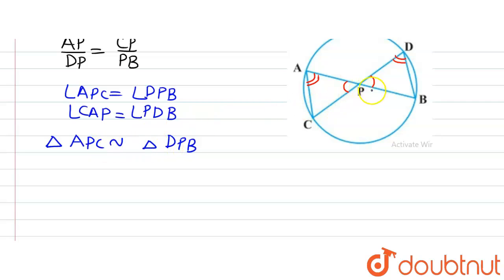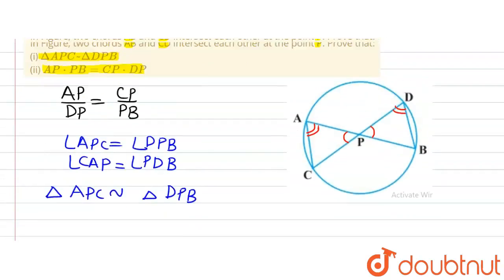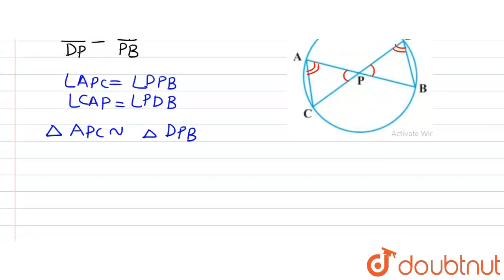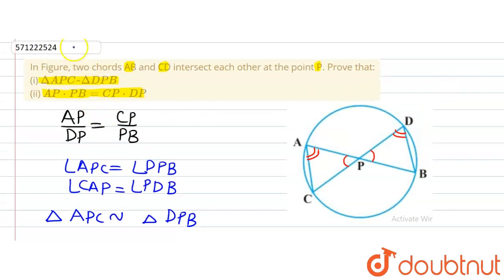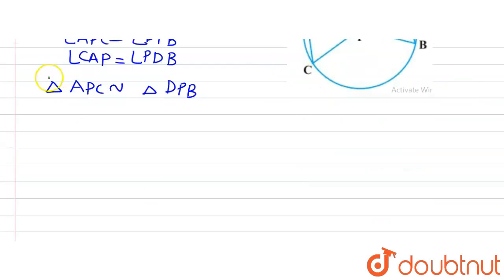Similarly, angle APC is equal to DPB, so we have put P on the second position, and then there is C and then there is B, that is the third vertex of the triangle. Now we have triangle APC similar to triangle DPB. This is what we were supposed to prove in the first part of the question. So first part is done.